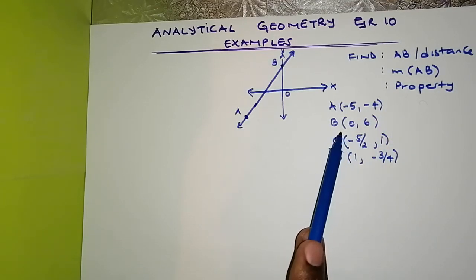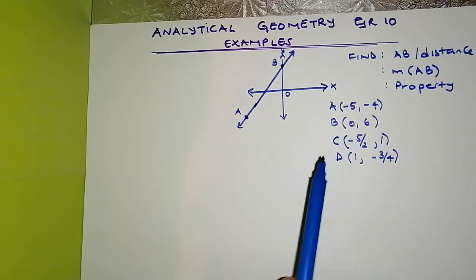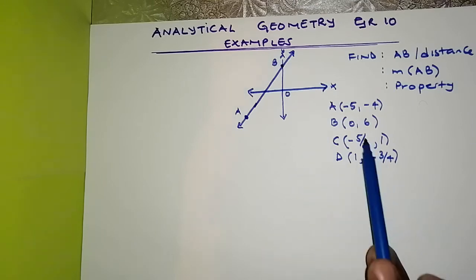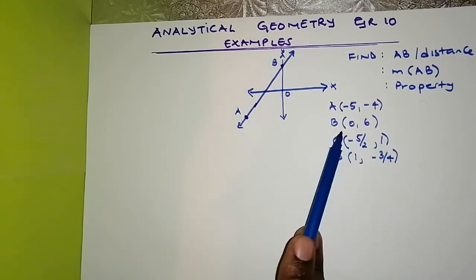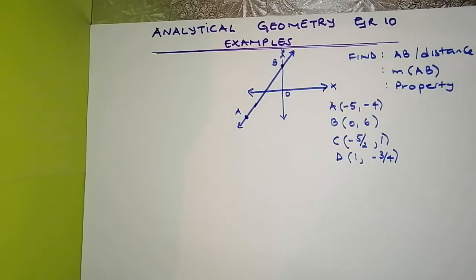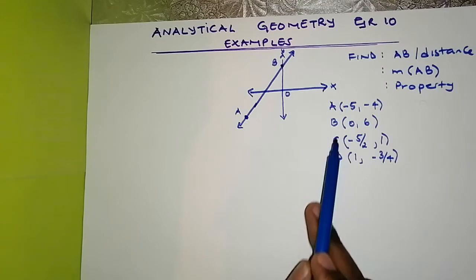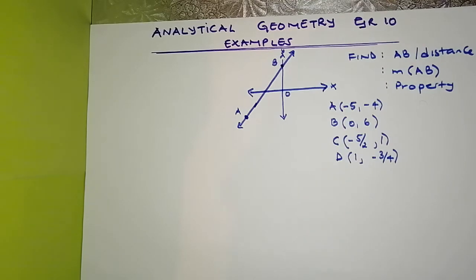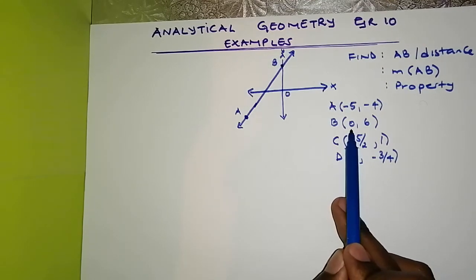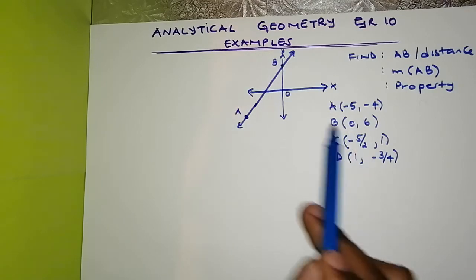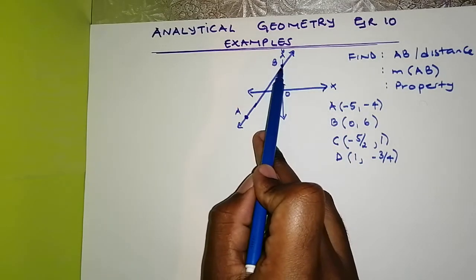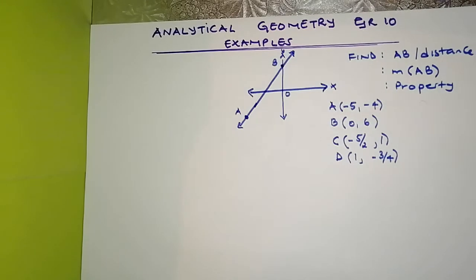Then we are given point B. The coordinates are 0 and 6. B is actually the coordinate of the Y-intercept because X equals 0 right there. So B is actually on the Y-axis.